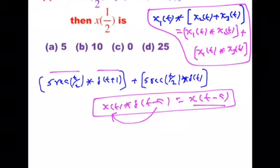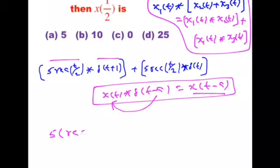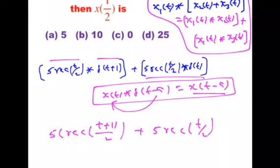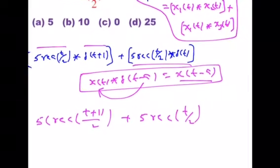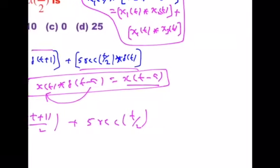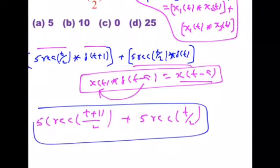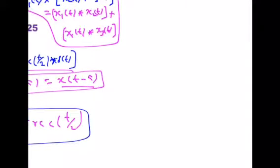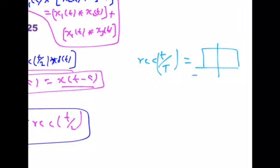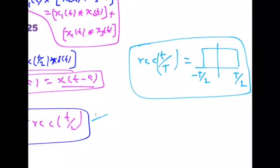After applying the impulse property, the expression becomes 5 into rectangle of (t+1) by 2, plus 5 into rectangle of t by 2. To proceed correctly, we must understand the rectangle function. Rectangle of t by capital T has a plot from minus T by 2 to plus T by 2.